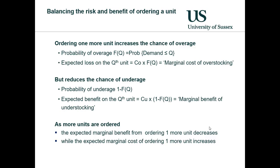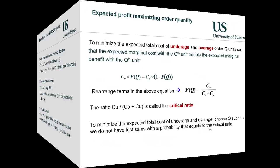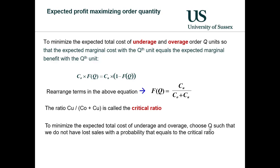As more units are ordered, the expected marginal benefit from ordering just one more unit decreases. On the other hand, the expected marginal cost of ordering one more unit increases. We can use these relationships to determine what is known as the critical value. What we aim to do is minimize the expected total cost of underage and overage. We rearrange terms to show that the critical ratio is the underage cost divided by overage plus underage cost. To minimize the expected total cost, we choose a value of Q such that we do not have lost sales with a probability equal to the critical ratio.